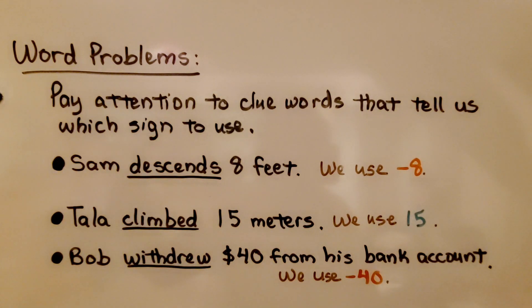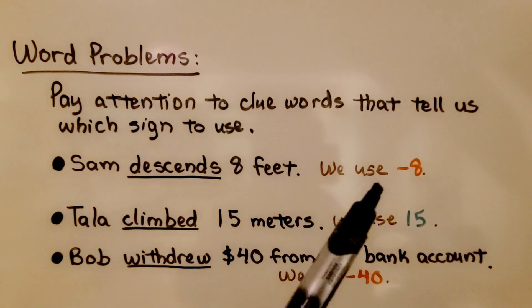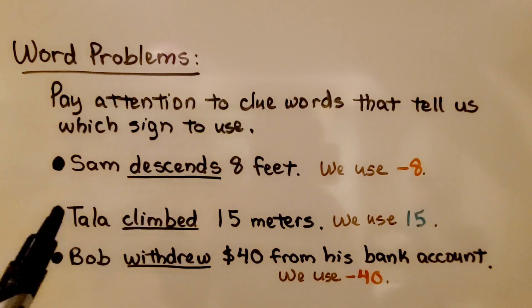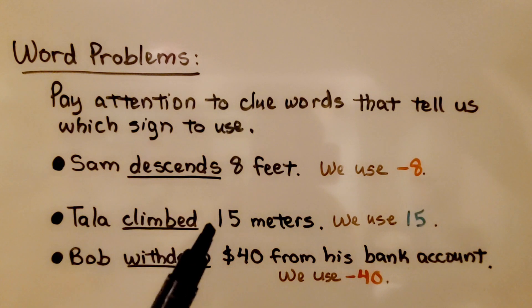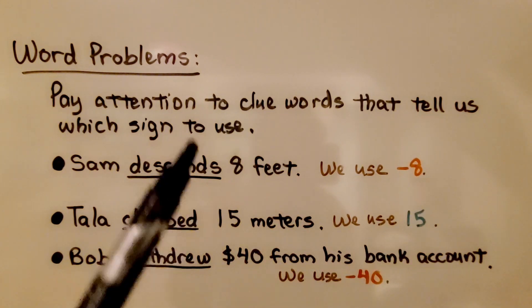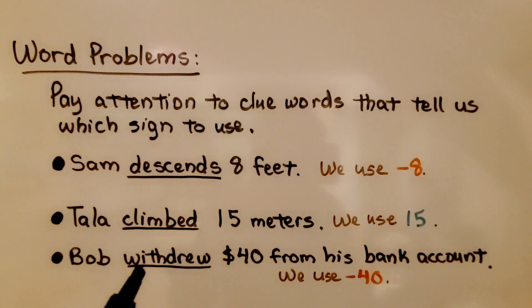For word problems, we need to pay attention to clue words that tell us which sign to use. If it says Sam descends 8 feet, we're going to use a negative 8. Descends tells us it's going down. Tala climbed 15 meters. We'll use a positive 15. She climbed, she went up. Bob withdrew $40 from his bank account. We use a negative 40. If he withdrew money, his account went down in value.